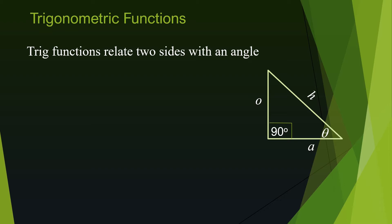The sides and the angle of a right triangle are related to each other — like humans have brothers, sisters, and cousins, triangles also have sine, cosine, and tangent. Those relationships are collectively called trig functions. Let's start with the trig function that relates the opposite side with the hypotenuse.